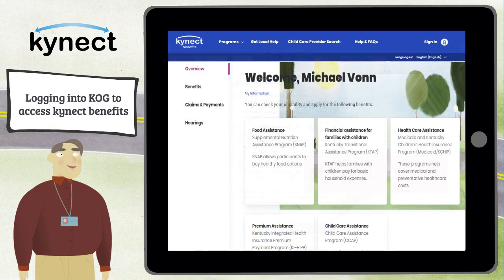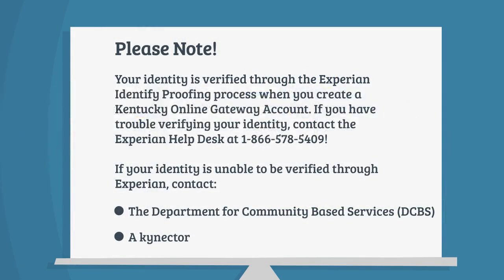Please note: when you create a Kentucky Online Gateway account, your identity is verified through the Experian identity proofing process. If you have trouble verifying your identity, contact the Experian help desk at 1-866-578-5409. If your identity is unable to be verified through Experian, contact the Department for Community-Based Services (DCBS) or a connector.